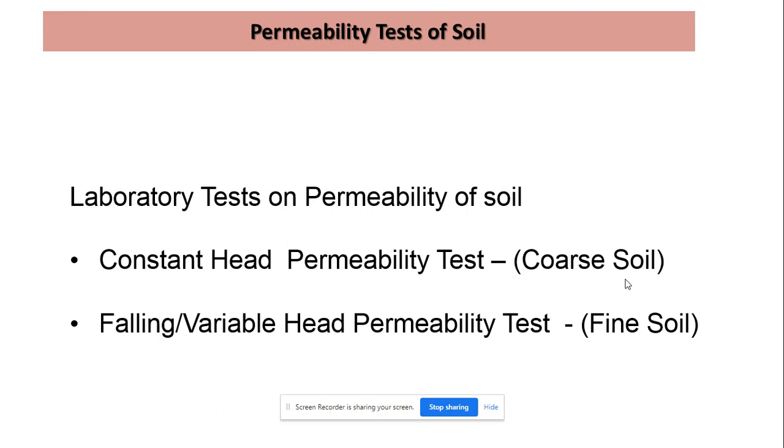Permeability in laboratory can be determined through two methods: constant head permeability test and falling head permeability test. Falling head permeability test is also known as variable head permeability test because in this test the head or column of water above the soil changes rapidly or falls.